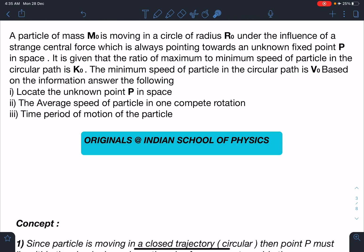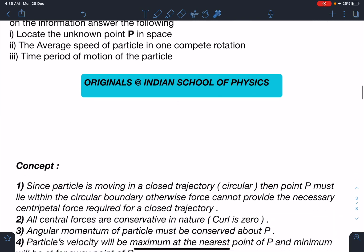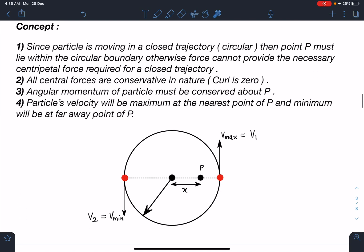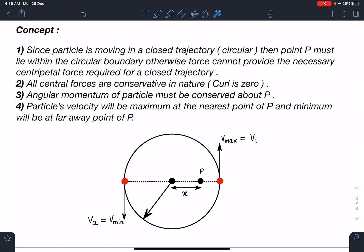Let's discuss the concept part. There are certain points related to central force you must keep in mind. Number one: Since the particle is moving in a closed trajectory, it can be circular or elliptical, then point P must lie within the circular boundary. Otherwise force cannot provide the necessary centripetal force required for a closed trajectory. So we are sure that this point is going to be somewhere within the circle boundary.